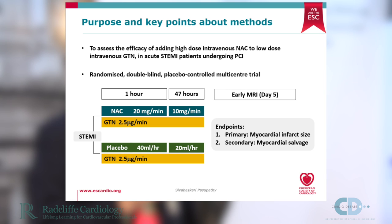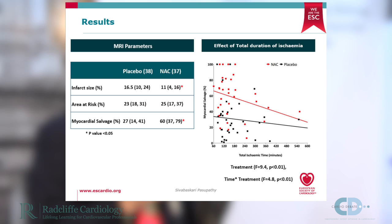An MRI was performed at about five days, with the primary endpoint being myocardial infarct size on MRI. The secondary endpoint was myocardial salvage. The key findings are that there was a 5.5% reduction in infarct size with N-acetylcysteine compared with placebo, despite no difference between groups in the area at risk of infarction. Consequently, there was a significant improvement in myocardial salvage.